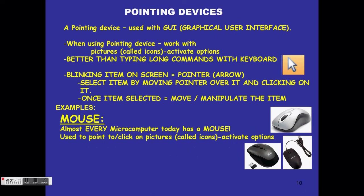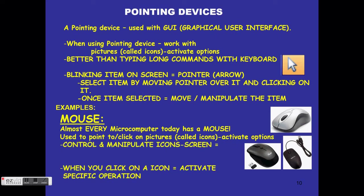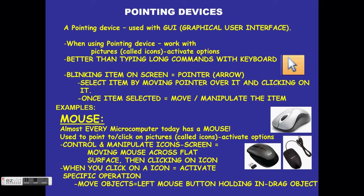Our first pointing device is the mouse. Most microcomputers today come with a mouse. It is used to point or click on icons to activate options — you control and manipulate icons on the screen. You move the mouse on a flat surface, which directs where the arrow goes. We have a left and right mouse button and a scrolling wheel. We move objects by holding the left button and dragging; we activate other options using the right click.